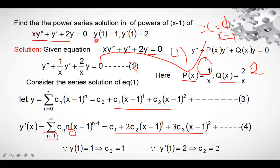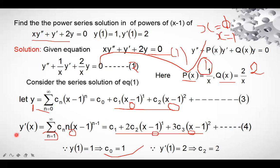Using the initial conditions: y(1) = 1 means y = 1 when x = 1. Substituting x = 1 into the y expansion makes every (x − 1) term equal to zero, giving c₀ = 1. Similarly, y'(1) = 2 means y' = 2 when x = 1. Substituting x = 1 into the y' expansion gives c₁ = 2. Remember: c₀ = 1 and c₁ = 2.